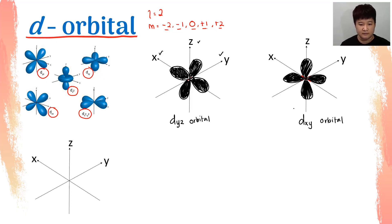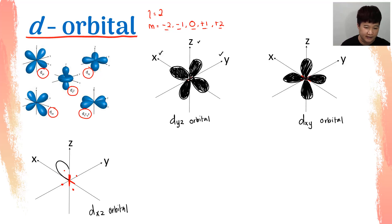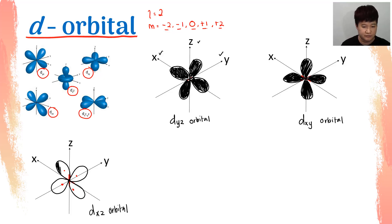The third one is the DXZ orbital. Similar to previous, the cloverleaf sits in between the X and Z axes. Draw the loops in between X and Z, in between X and Z — and there goes your cloverleaf of the DXZ orbital. Shade them off, and that is your DXZ orbital.